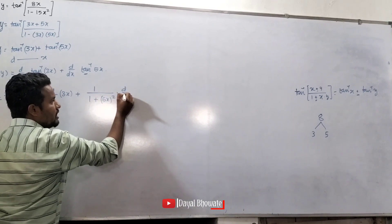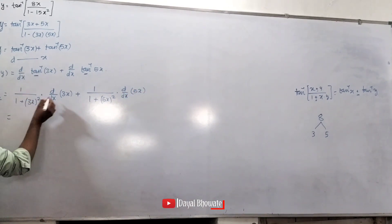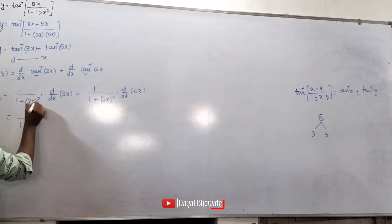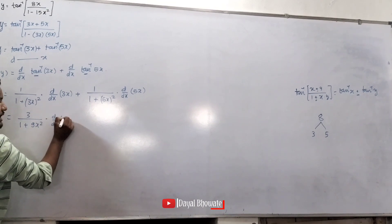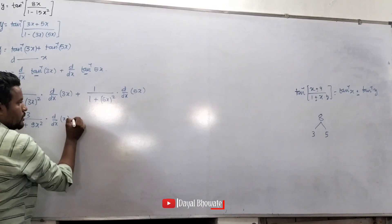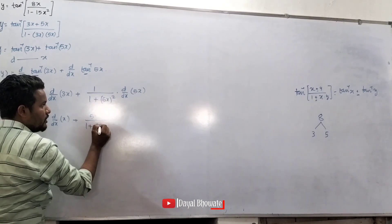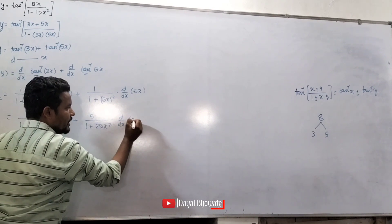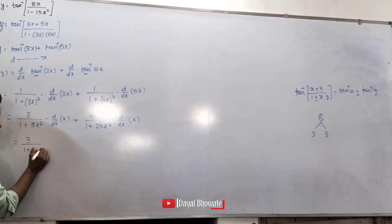Into the derivative of the inner function: 1 plus 9x squared, into derivatives of x, plus 5 divided by 1 plus 25x squared, into derivative of x. This gives 3 divided by 1 plus 9x squared, plus 5 divided by 1 plus 25x squared.